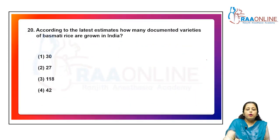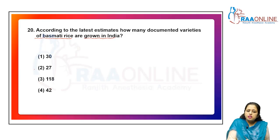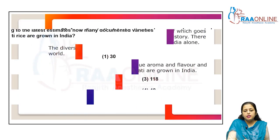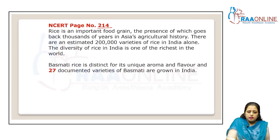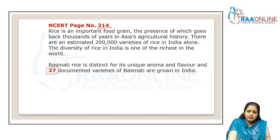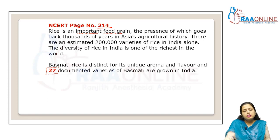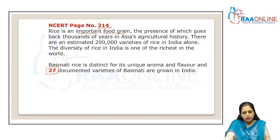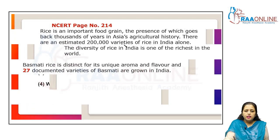According to the latest estimates, 27 documented varieties of basmati rice are grown in India. This is the exact data given in NCERT page 214: basmati rice is distinct for its unique aroma and flavor, and 27 documented varieties of basmati are grown in India. Rice is an important food grain with a history going back thousands of years in Asian agriculture. There are an estimated two lakh varieties of rice in India alone.